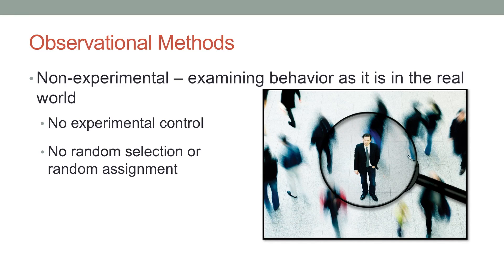You typically examine people as they arrive in a natural environment, and of course there are no experimental groups, so you don't randomly assign them to anything. So these kinds of methods lack the experimental control and random assignment needed to infer causation. They can't replace experiments in figuring out what causes behavior, but they can get at real-world behaviors to figure out what people actually do.